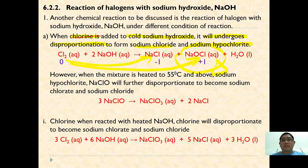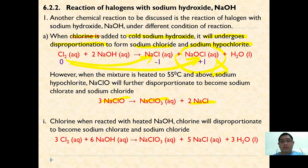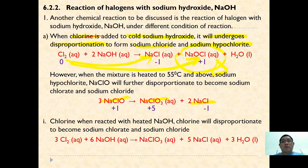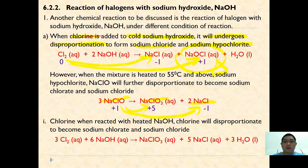When this mixture is further heated to 55°C and above, it will further disproportionate to form sodium chlorate (NaClO₃) and sodium chloride, according to the equation: 3 NaOCl → NaClO₃ + 2 NaCl. This is a further disproportionation reaction because oxidation and reduction further take place on the same NaOCl.